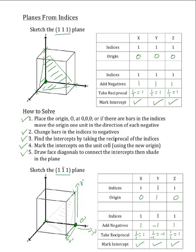Now the next step is to draw the face diagonals to connect these intercepts. So I will draw a line connecting the x'-intercept to the y'-intercept. I will draw another line connecting the y'-intercept to the z'-intercept. And I will draw a final line connecting the z'-intercept to the x'-intercept. Now all that's left to do is shading the plane, and you should see it beginning to take shape. And there you have it — that is how to draw the 1,1̄,1 plane. If you have any further questions, make sure to check out our YouTube channel, Materials Concepts. Thanks for watching!